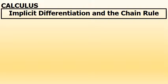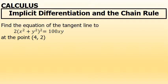Let's look at an equation where the derivative requires implicit differentiation in addition to the chain rule. Here we're being asked to find the equation of the tangent line to 2 times the quantity of x squared plus y squared, squared, equals 100xy at the point (4, 2).